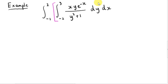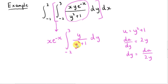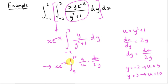Let's take this next example. This is the inner integral — we are integrating the surface with respect to y, treating x as a constant, so we can take x e to the minus x outside the integral. Notice that the derivative of the denominator is a multiple of the numerator, so we use the substitution u equals y squared plus 1. Differentiating gives du/dy equals 2y, so dy equals du over 2y. If y equals minus 2 (the lower limit), u equals 5; if y equals 3 (the upper limit), u equals 10.